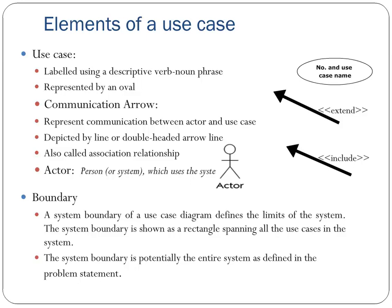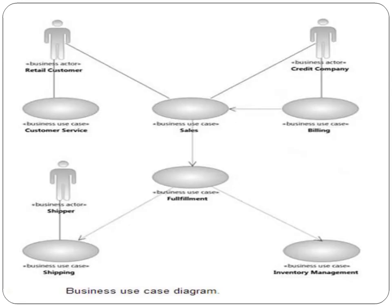Communication is depicted by a line or double-headed arrow line — these lines are also called association relationships. An actor is the person or entity which uses the system. The boundary element defines the limits of the system.